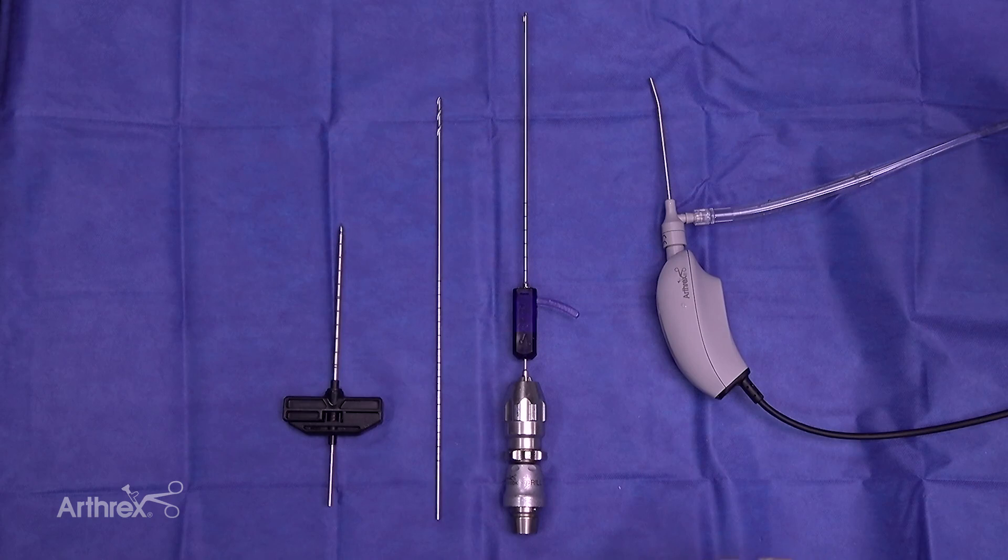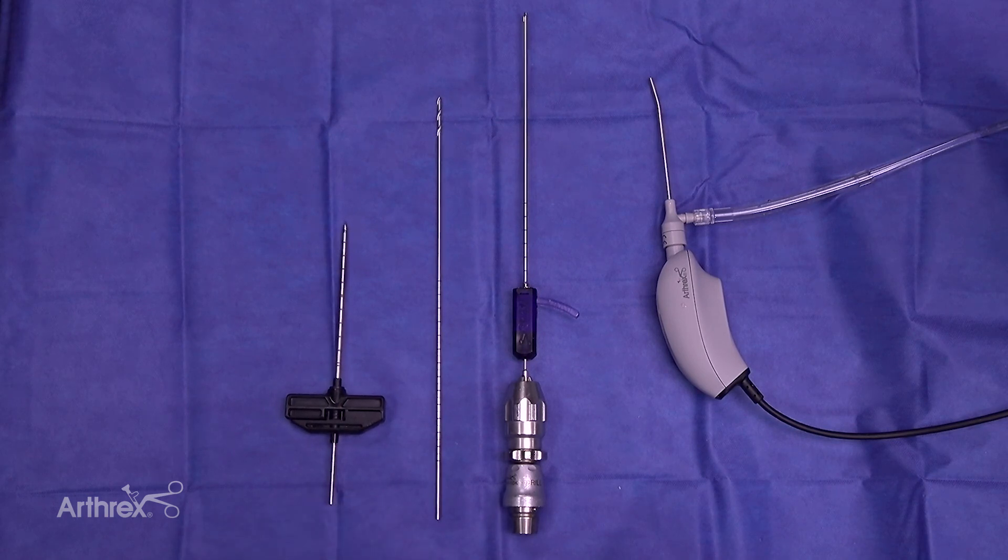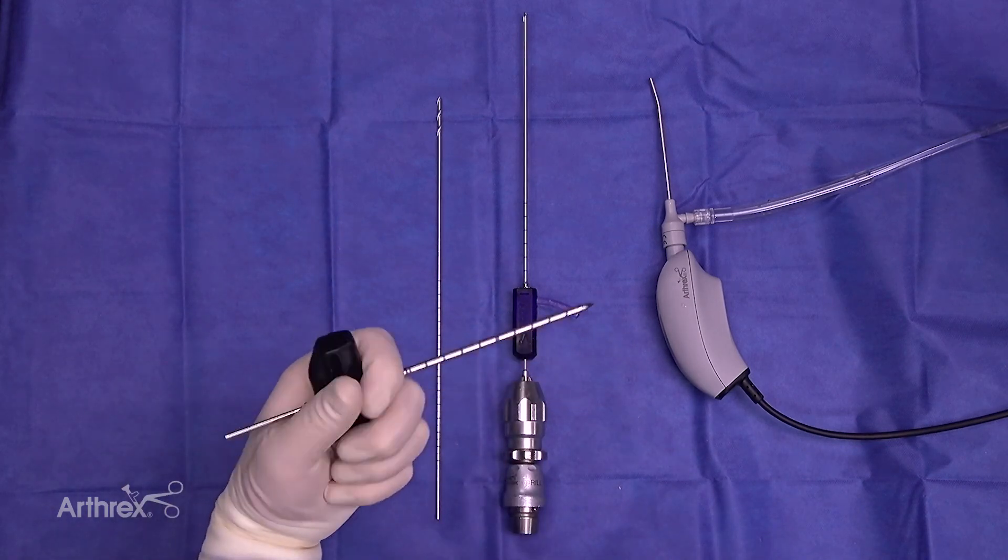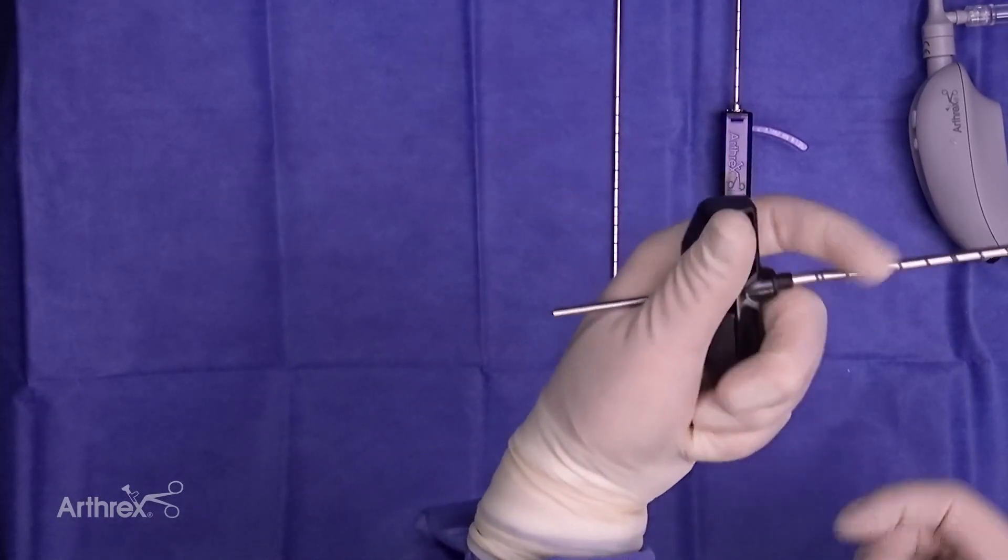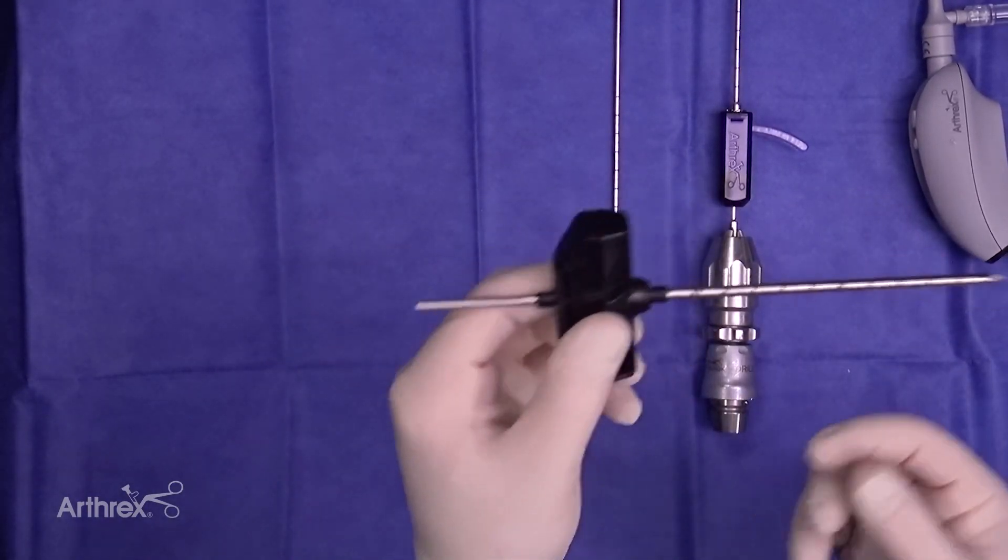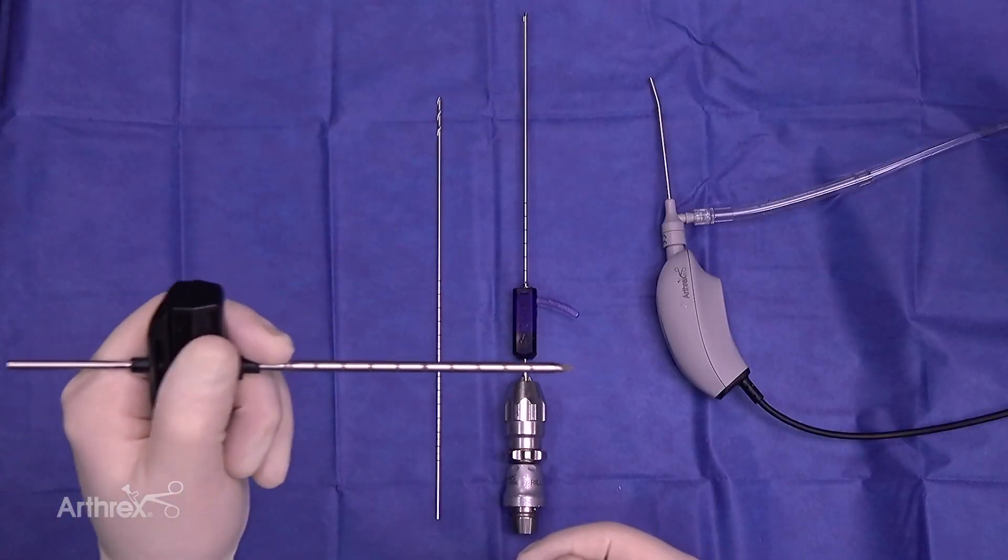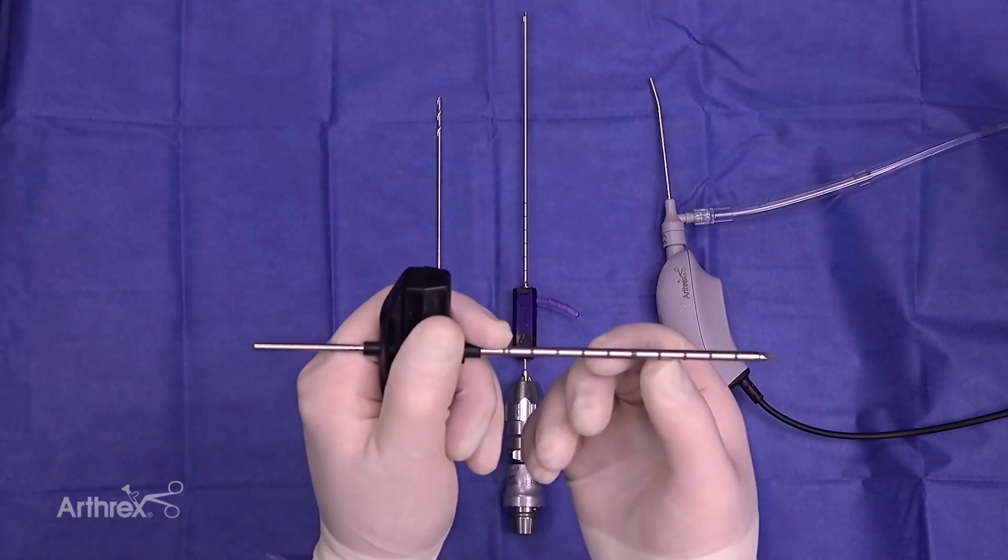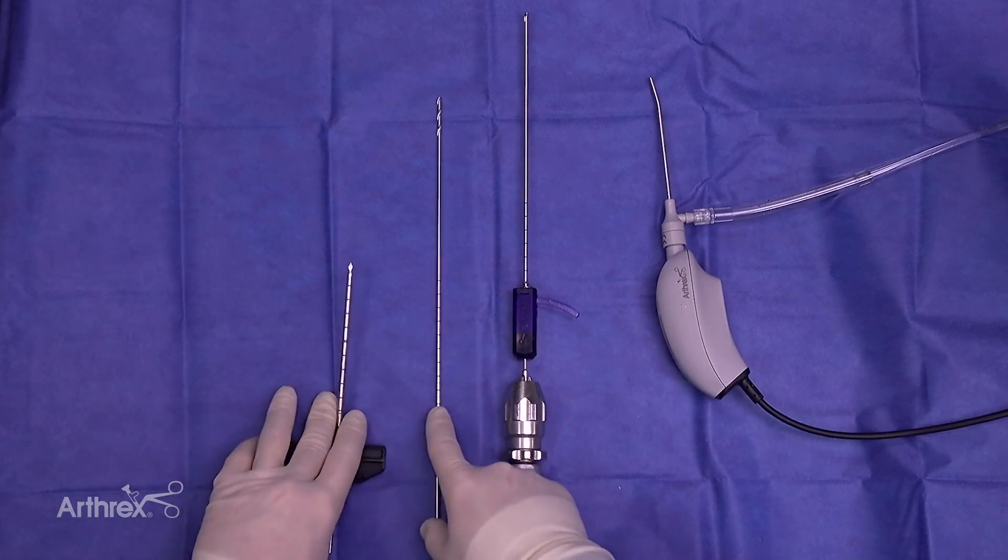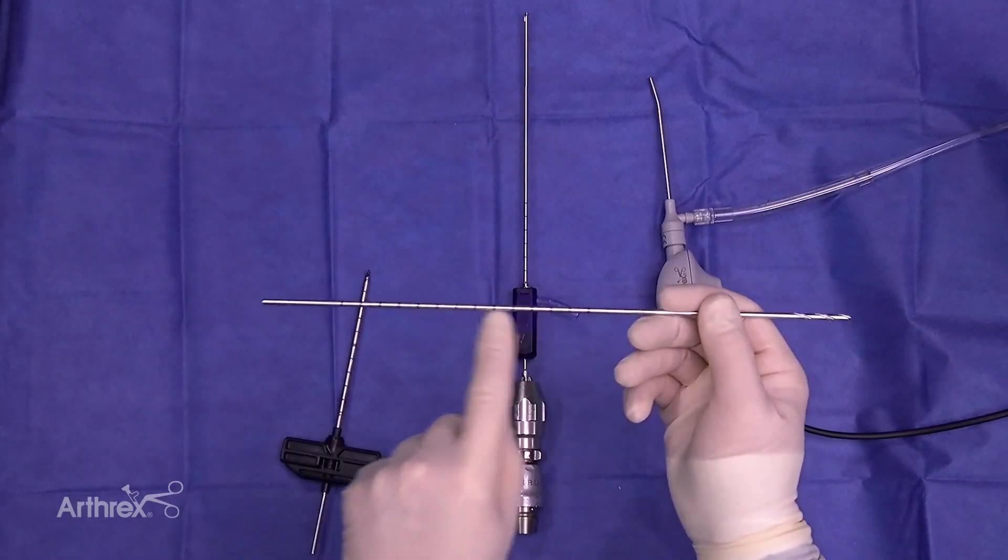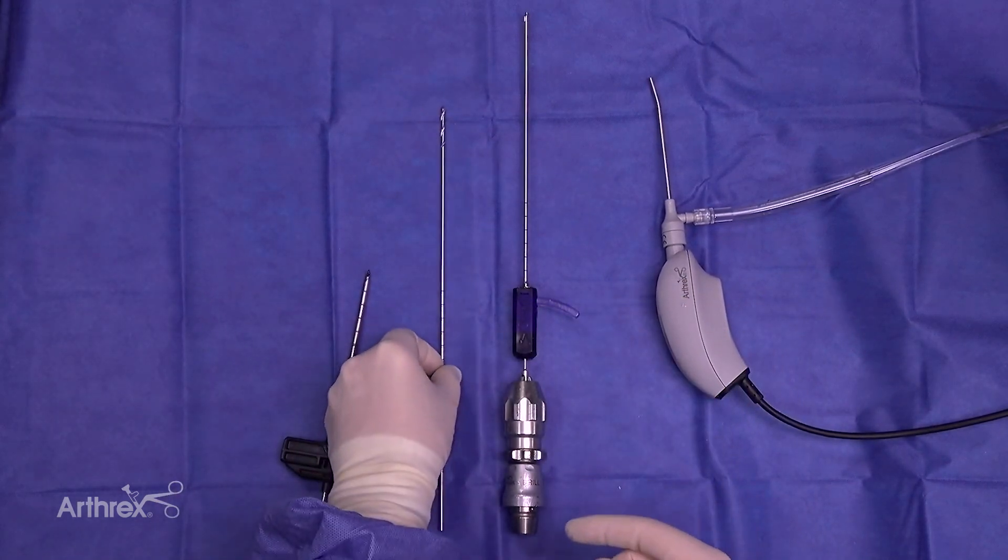Here we have our initial setup. So here's our delivery cannula. I want to point out that this has a pin driver connection. So this is very easy to assemble to take on and off. And you can actually deliver this or you can put this into bone. It's got a very sharp end. You can use your hand to put it in or you can connect it to power to put it in. You can put this in either all the way to the depth which you would like because it is graduated, but you can also use this in conjunction with the guide pin here that is graduated that has measurements on it to get down to the depth.